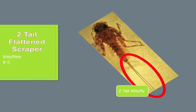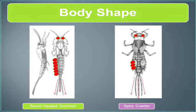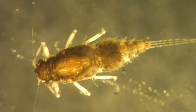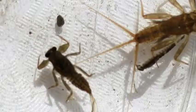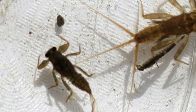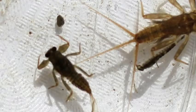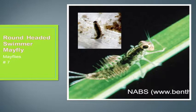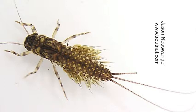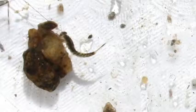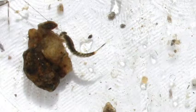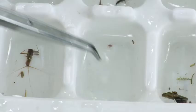Here's an example of a flattened scraper mayfly — the two-tailed version. Here's another set of mayflies that volunteers commonly misidentify: the round-headed swimmer and the spiny crawler. Their bodies are shaped much alike, so it's hard to just look at the shape of the head, location of the eyes, and number of tails to figure out what you're looking at. Both have three tails, both have eyes on the sides of their heads, and both have gills on the lower part of their body. The round-headed swimmer has a very streamlined, torpedo shape built for swimming through the water column. When you pull them up, they won't be moving much, but when you put them in water, they swim very quickly with an undulating motion.